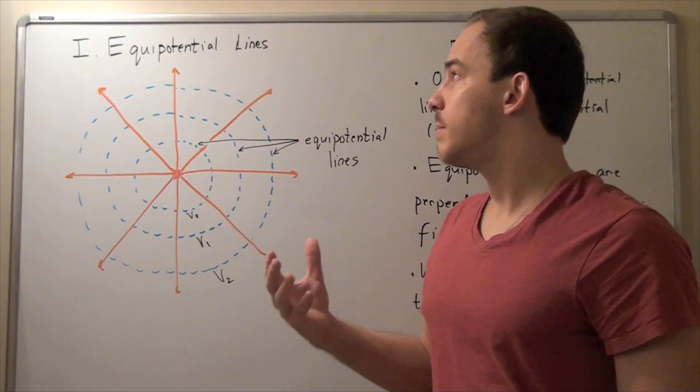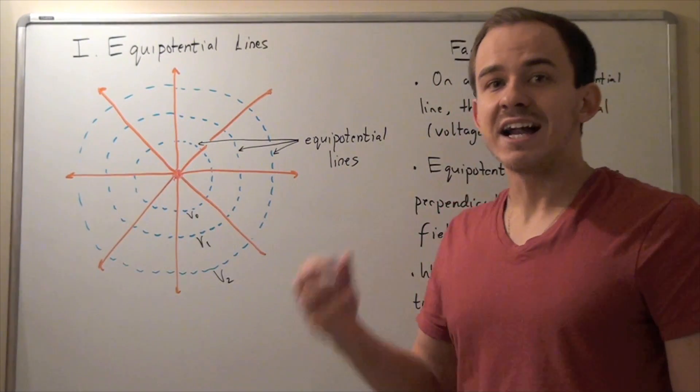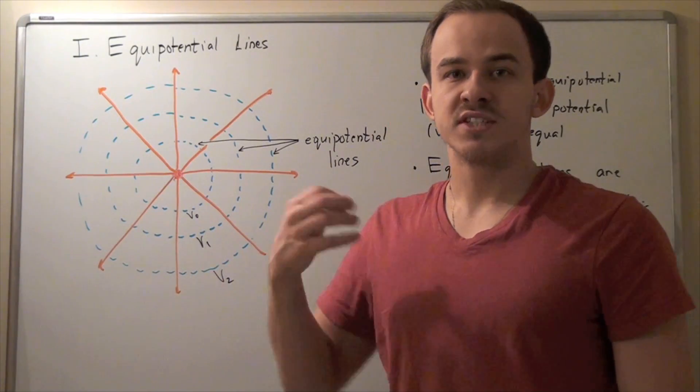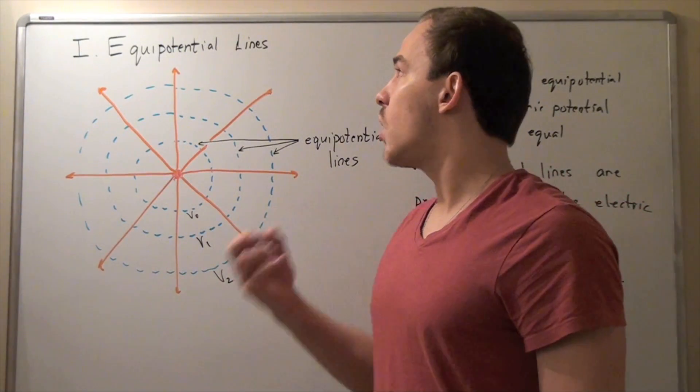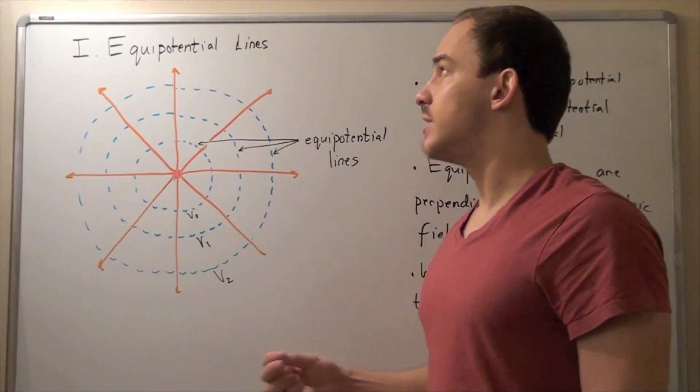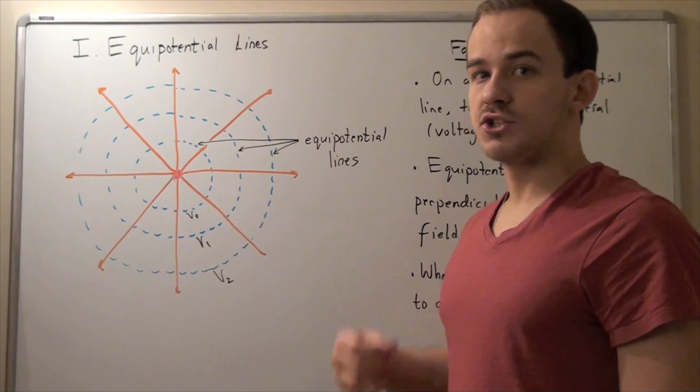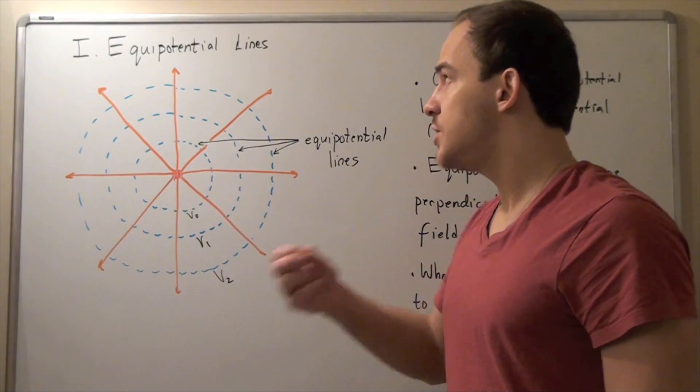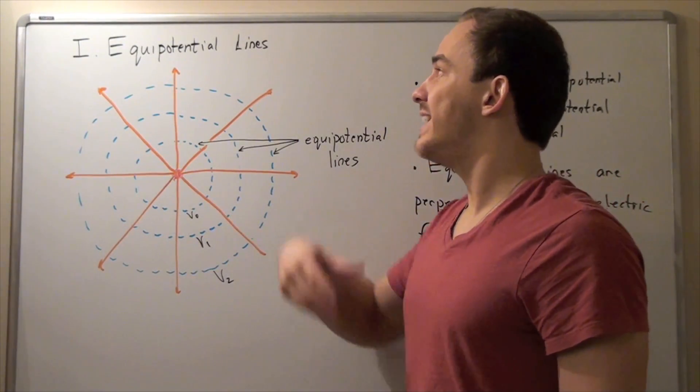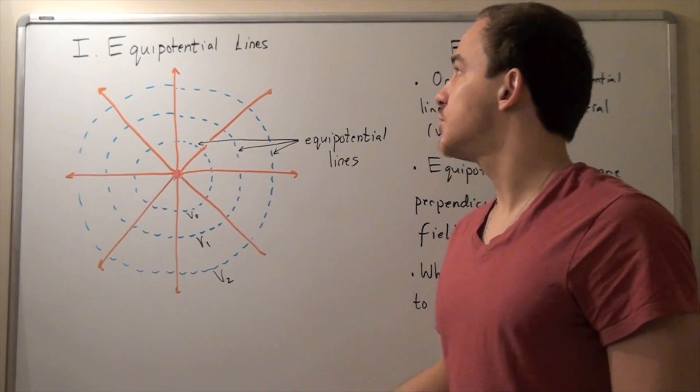Of course, if we're talking about a different type of field, not an electric field, such as a gravitational field, we're going to talk about not electric potential, but gravitational potential. So for a gravitational field, we're going to talk about equal gravitational potential lines.